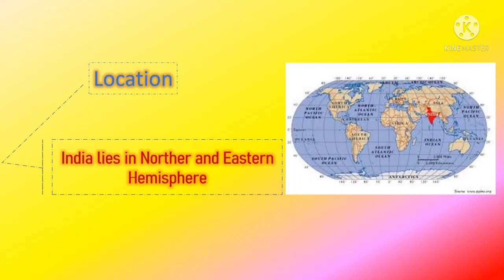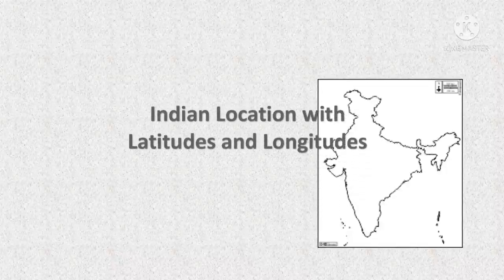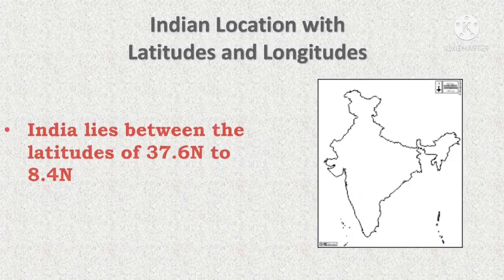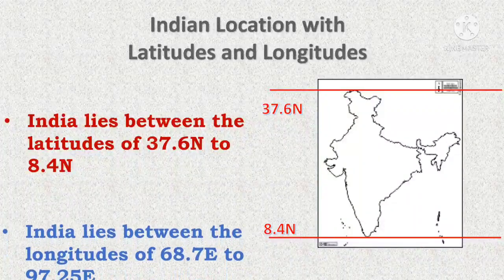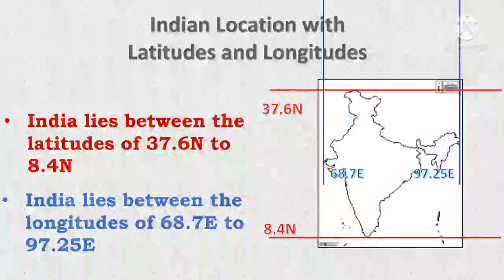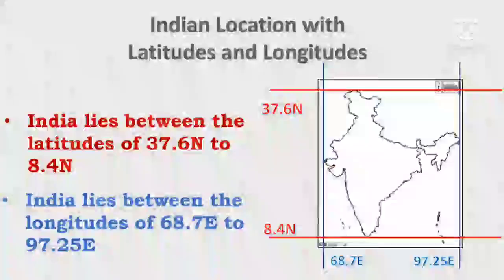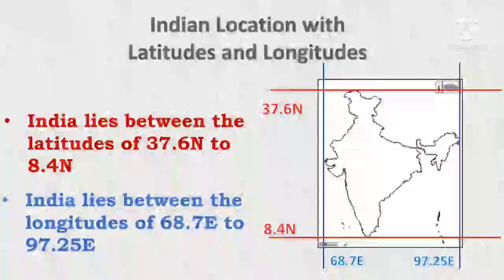India lies on the world map in the northern and eastern hemisphere. India lies between the latitudes of 8.4 degrees north to 37.6 degrees north, and between the longitudes of 68.7 degrees east to 97.25 degrees east.